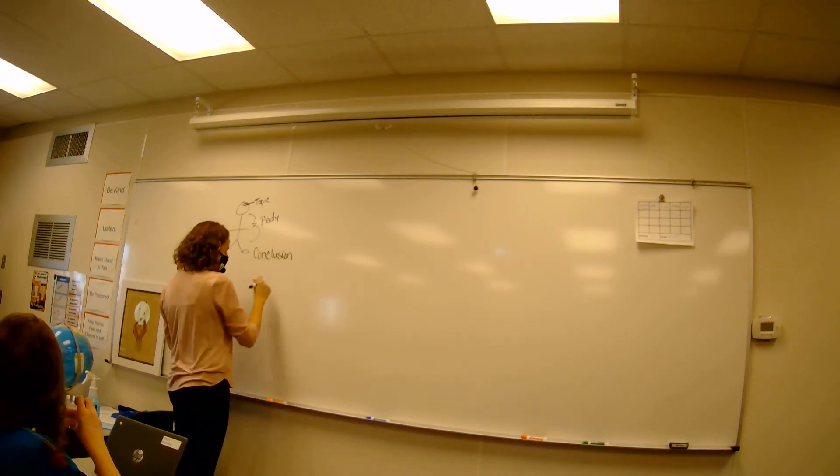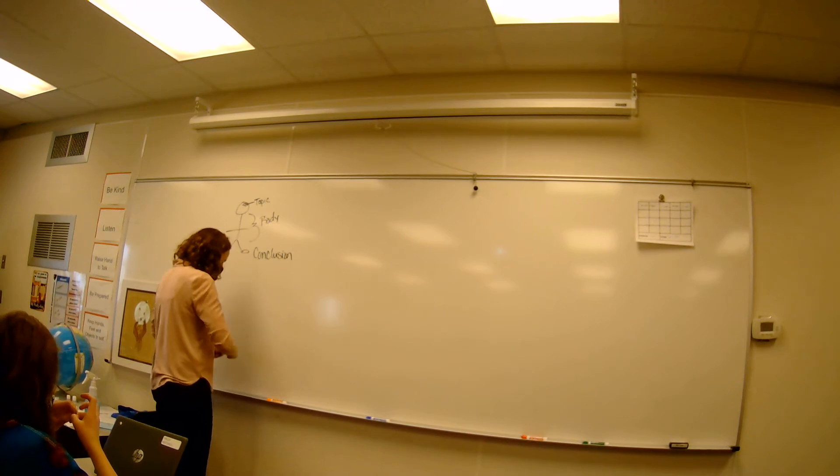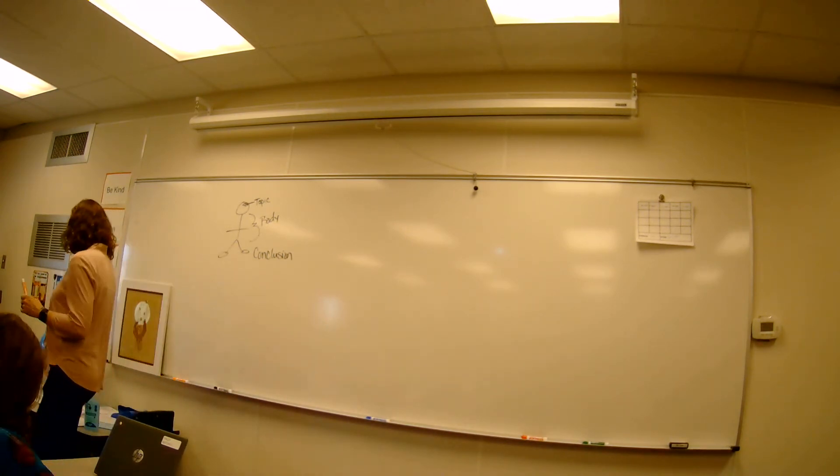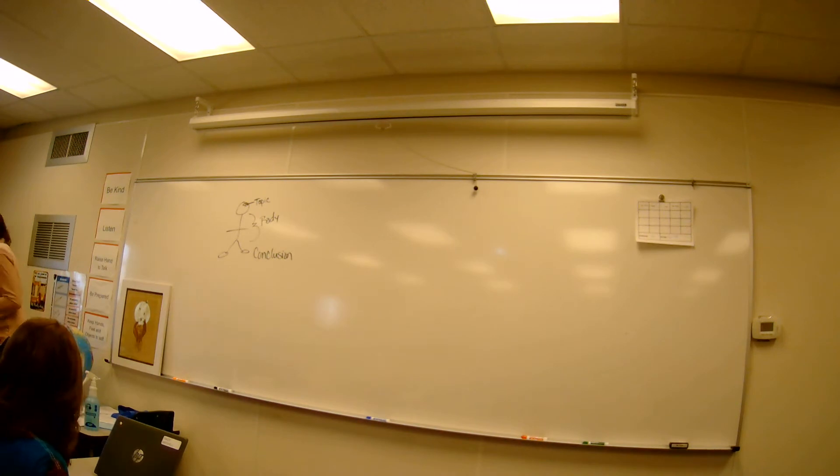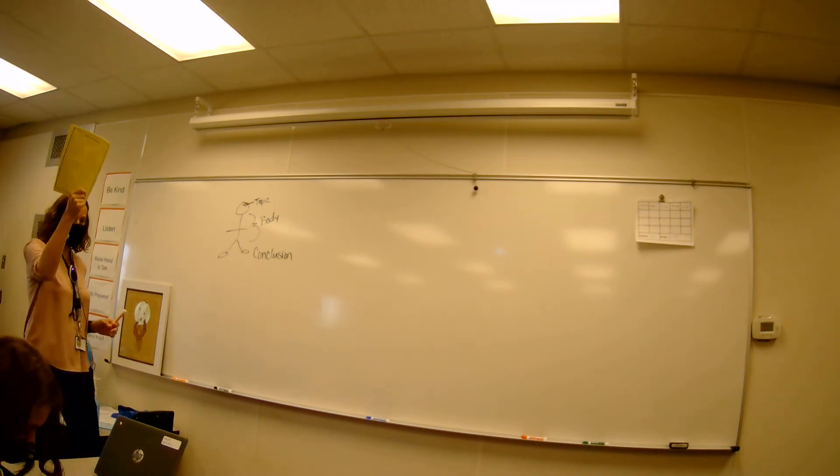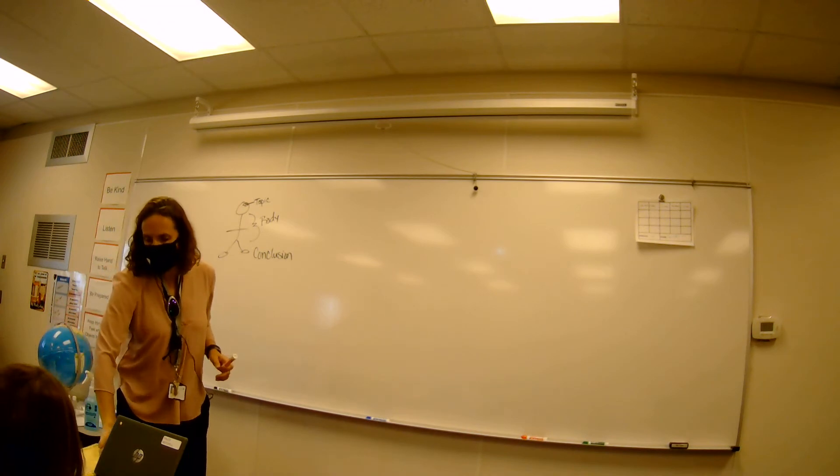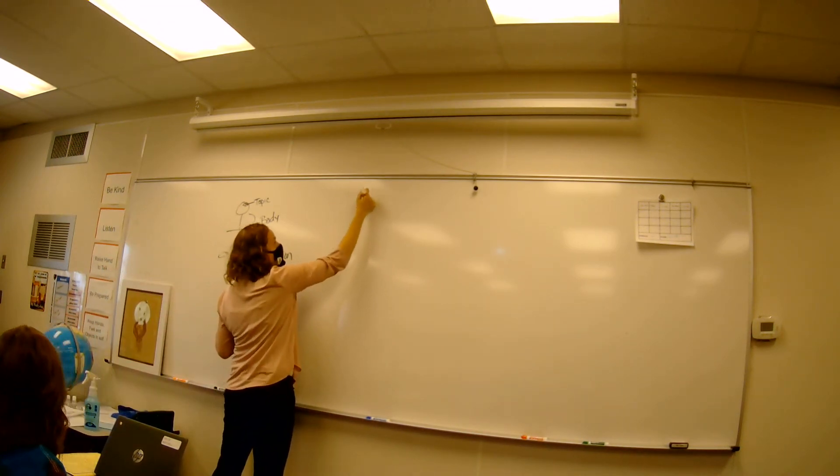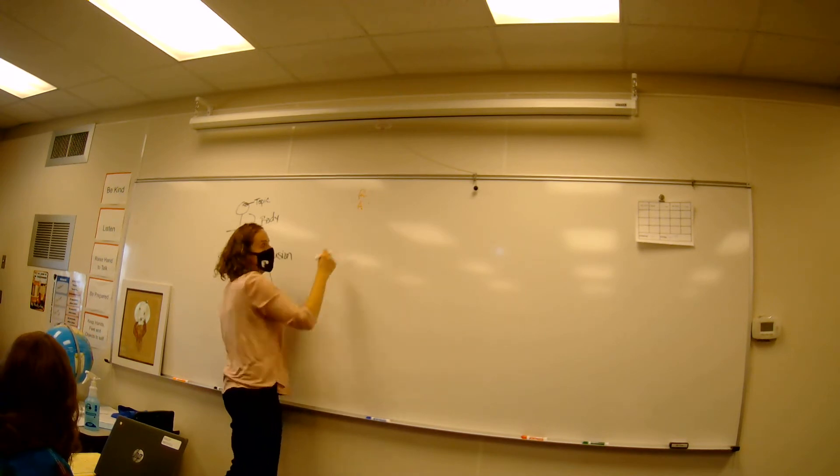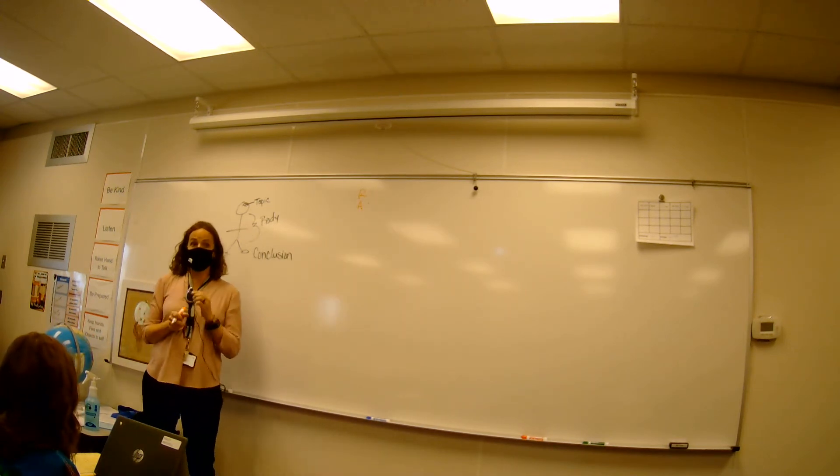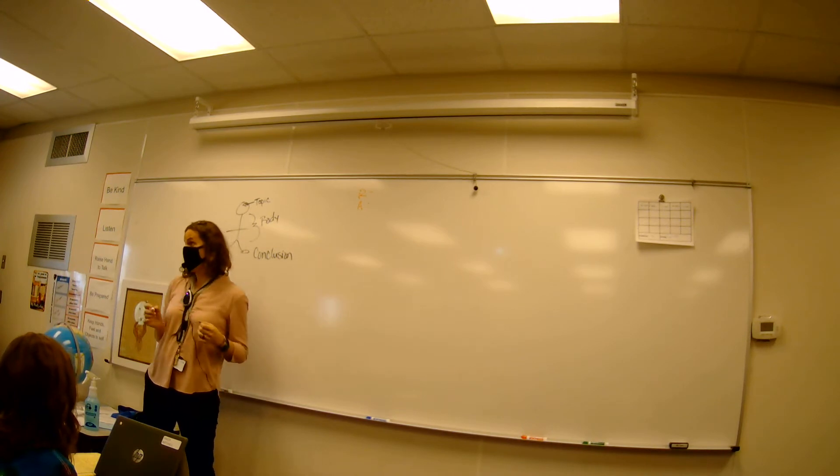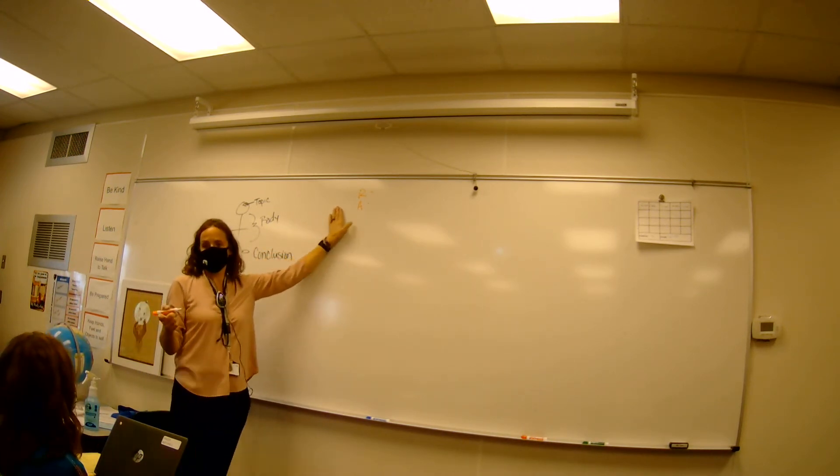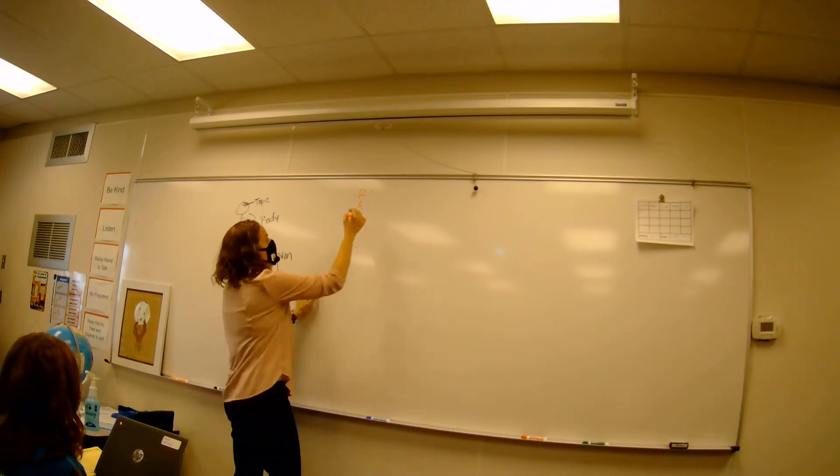Now the format you're going to learn with your teachers is called the RACES format. And if you remember, I gave you the yellow cheat sheet a while ago. If you've lost it, I have plenty of copies. I'll give you another one. So let's go over what RACES stands for. So we have our first two letters, which are R and A. Does anybody remember what those mean? And the RACES format, what do these stand for? Yeah. Restate.